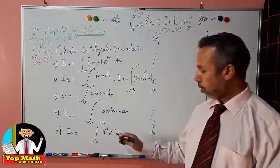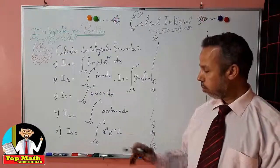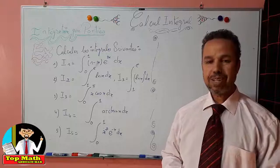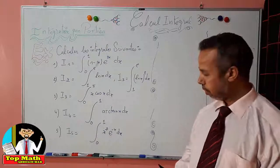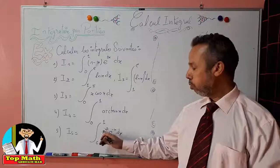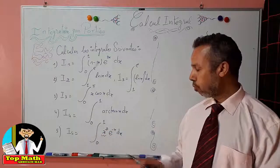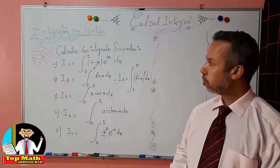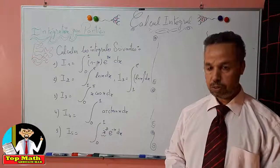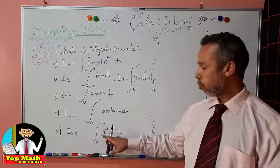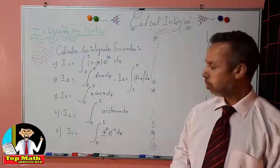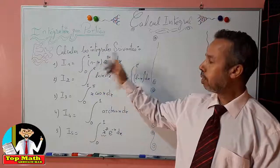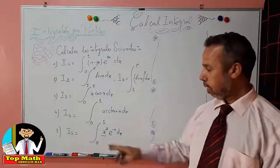We can generalize this remark: when we have a polynomial function multiplied by an exponential of the form ax + b, the number of times we apply integration by parts depends on the degree. If the degree is 2, as is the case here with x², we apply it two times successively. If the degree is 3, then three times, and so on.